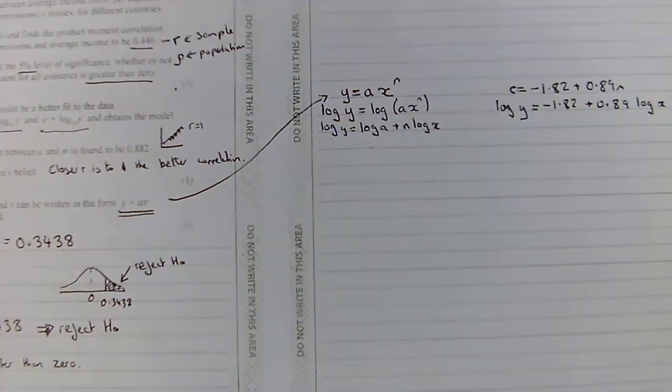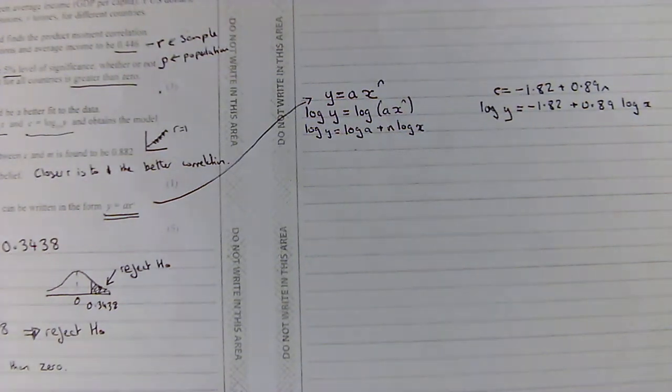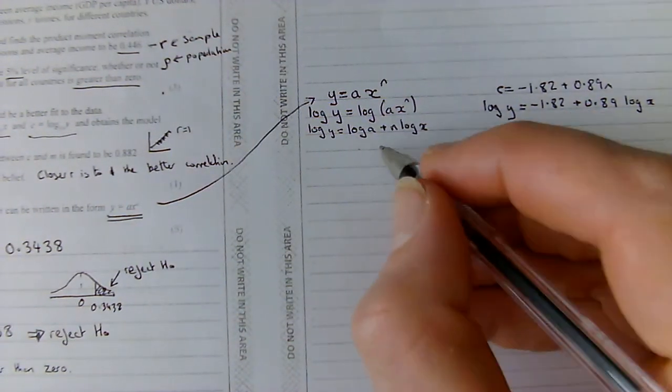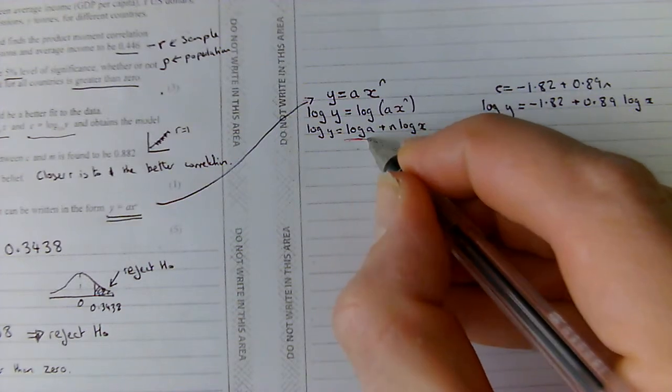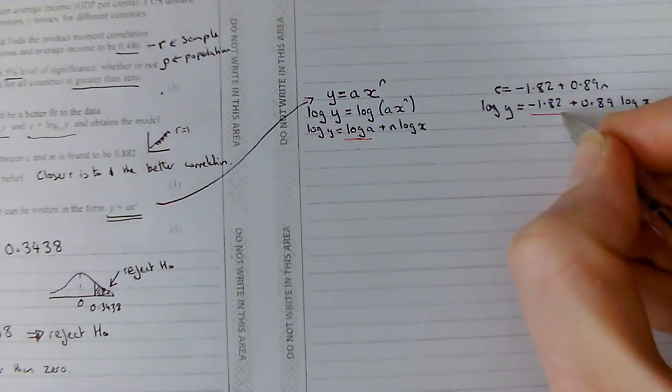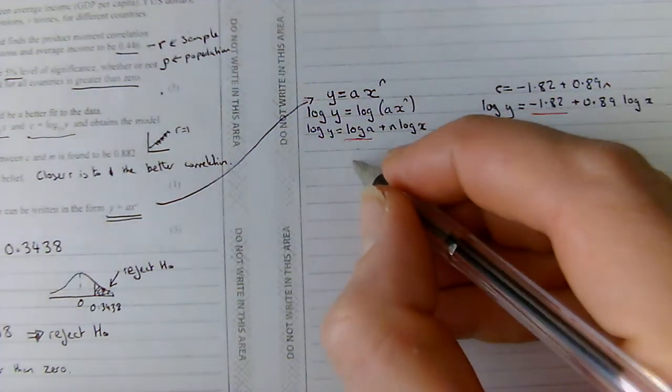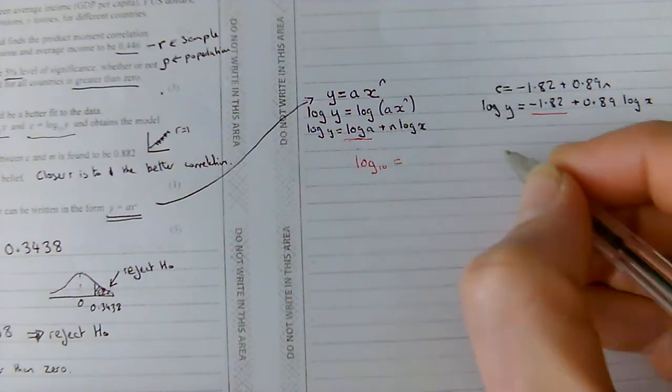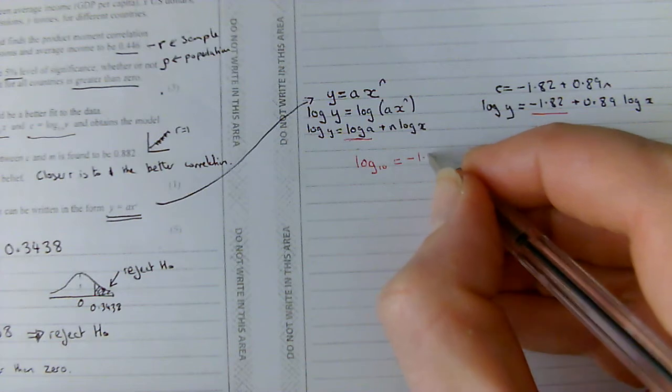Well, let's just compare the two different equations that we've got. So, I've got log y and log y. I've got log A over here and minus 1.82 over here. So, I can say the log base 10 of A equals minus 1.82. Here,